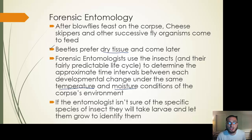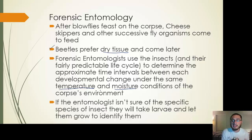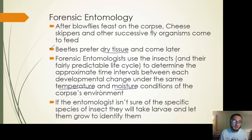If the entomologist isn't sure of the specific species, they take it back to their lab and let the insects grow a bit more so they can positively identify the exact species in order to get as much information as possible about that insect's life cycle — how long it takes for eggs to hatch, how long the first instar takes to become the second instar, and so on.